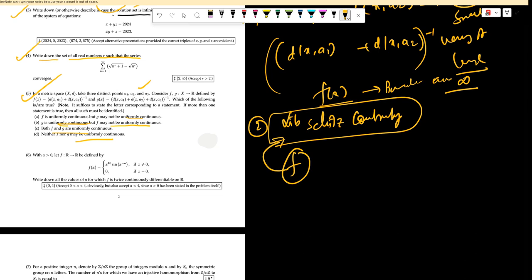If there exists a constant L such that the modulus difference is less than or equal to L times d(x, y) for all values of x, y belonging to X.